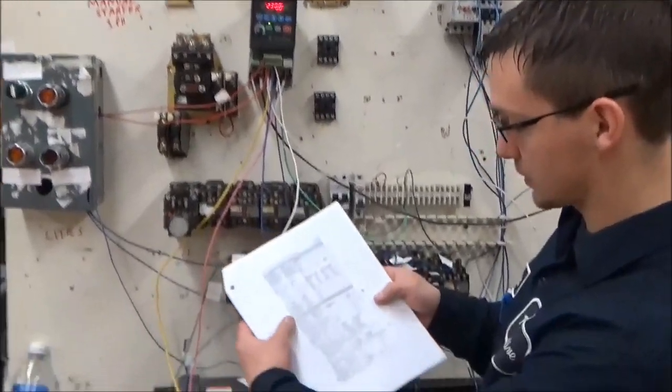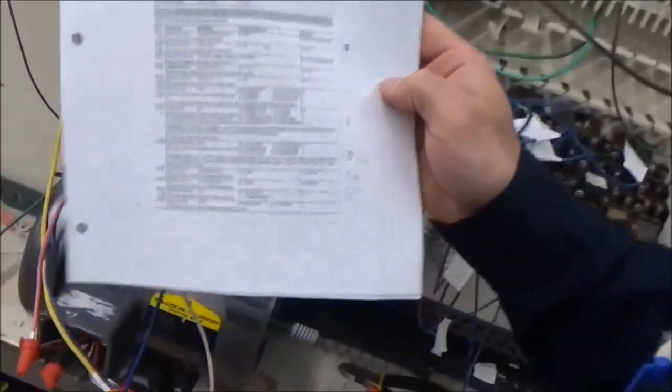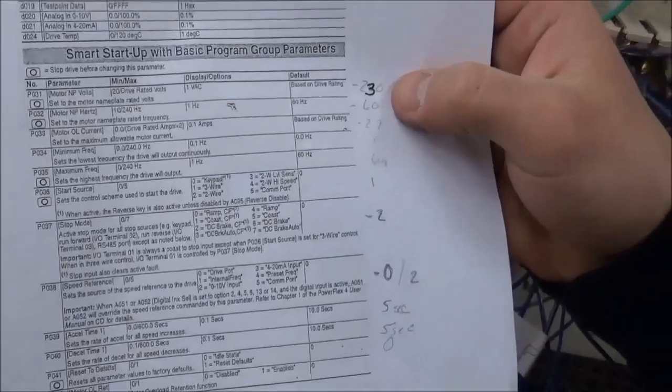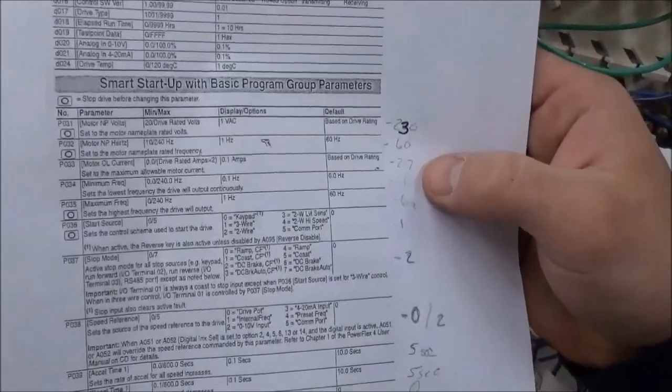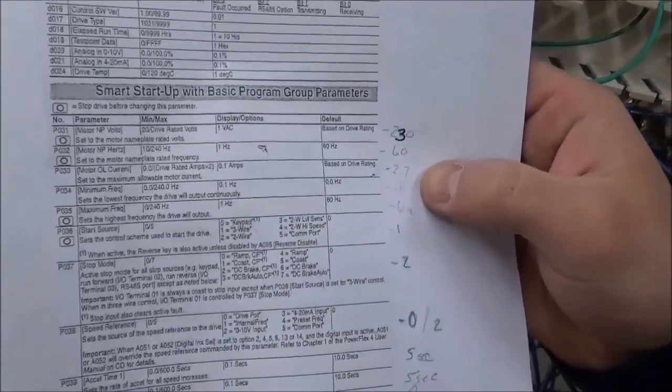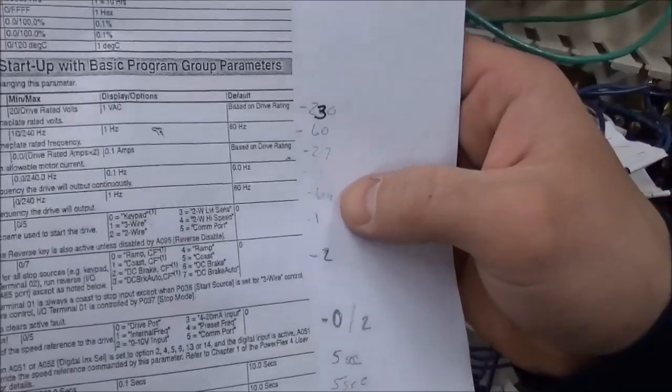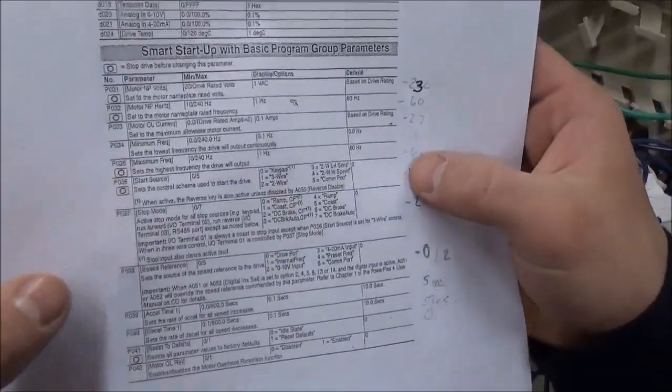What we basically did is use this smart setup. We have our 230 volts, 60 hertz. We rated it at 2.7 amps. The frequency is at 60. We have our storage source of zero.